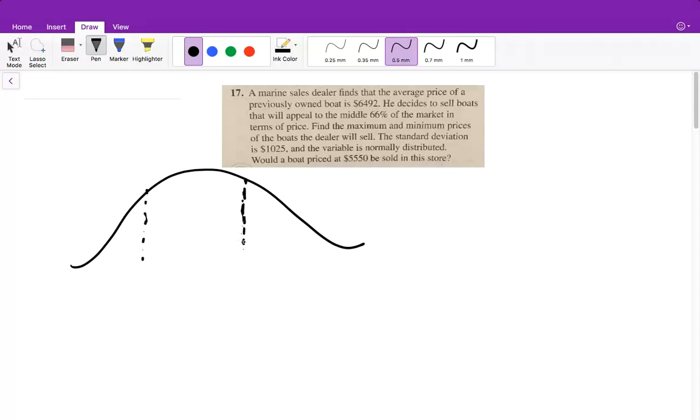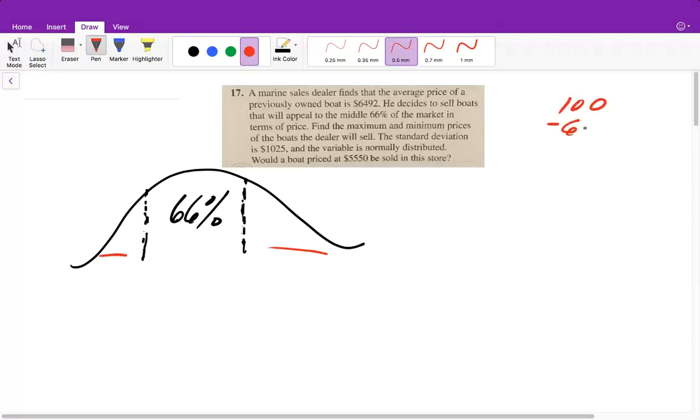He decides to sell boats that will appear in the middle 66%, so that means he's looking for the middle 66%. So what you need to do is figure out what's on each tail. Well, we would do 100 minus 66, which equals 34, and since there's two equal parts, we divide 34 by 2, which gives us 17%. So 17% will be on each tail.